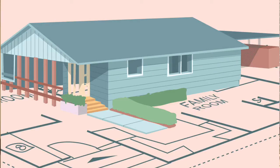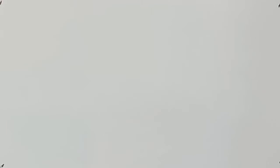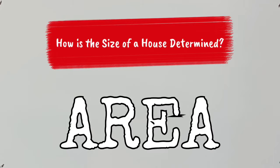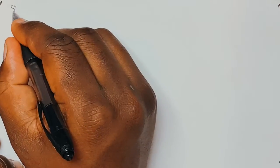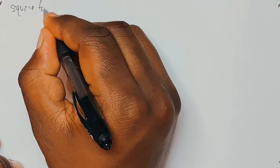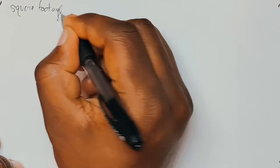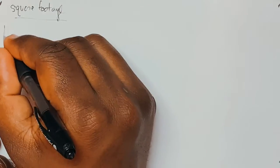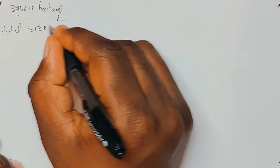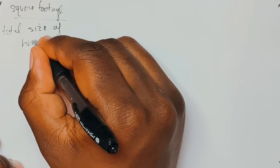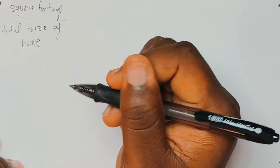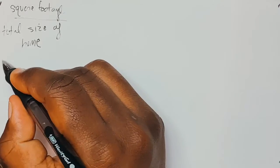So today, we are going to make a 14-square-foot home blueprint. Before we can become a perfect architect and build a floor plan, we must first understand how the size of a house is determined. The size of the house is determined by the square footage. The square footage tells us the total size of the home.